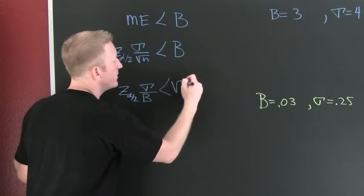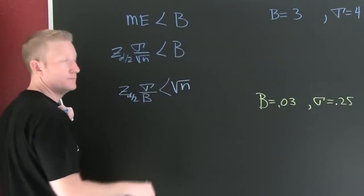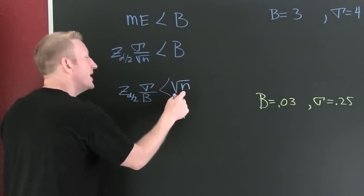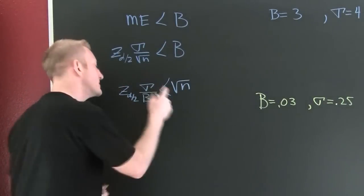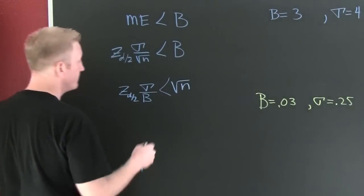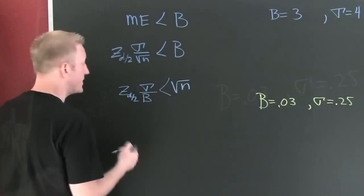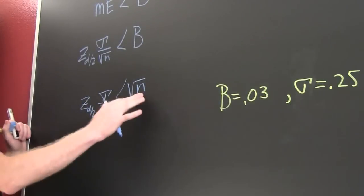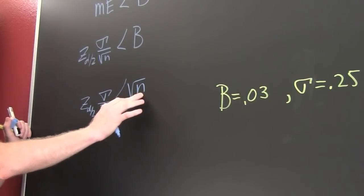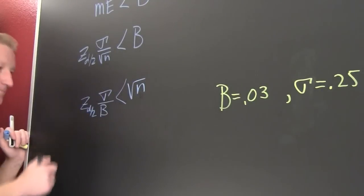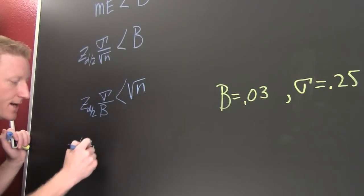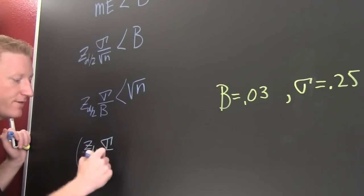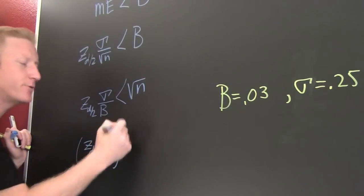Performing this, z alpha over 2 times standard deviation divided by b is going to be smaller than the square root of n. I'm trying to get n by himself, so I'm going to square both sides. That's legitimate because that's a positive number. So then I square both sides, multiplying this side by itself, multiplying that side by itself, maintaining my equality.